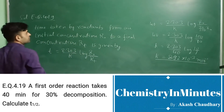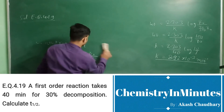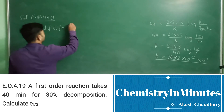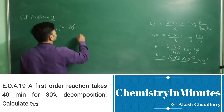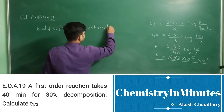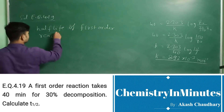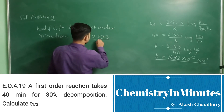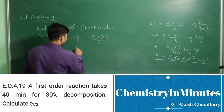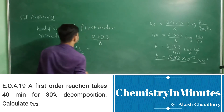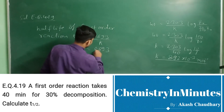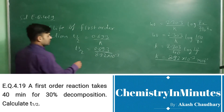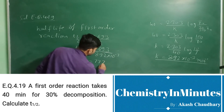Now the half life. The half life for a first order reaction: t half equal to 0.693 upon k. On putting the values: t half equal to 0.693 upon 8.92 into 10 raised to the power minus 3. On solving this we get 77.7 minutes. So this will be the half life of the reaction.